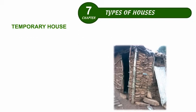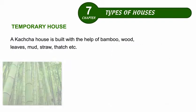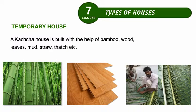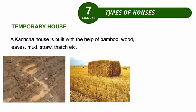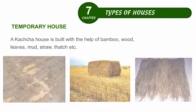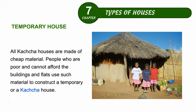Temporary House. A Kaccha house is built with the help of bamboo, wood, leaves, mud, straw, thatch, etc. All Kaccha houses are made of cheap material.